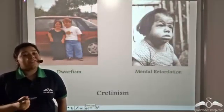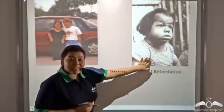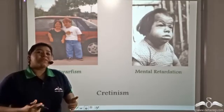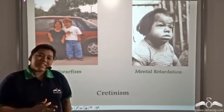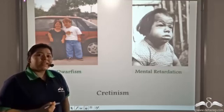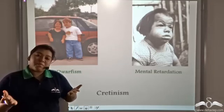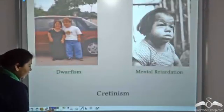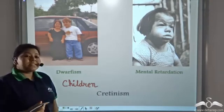Under-secretion of thyroxine hormone from the thyroid gland causes dwarfism, which is stunted body growth, as well as mental retardation, which is reduced brain growth. Both these symptoms together in children cause the disease known as cretinism. Thyroxine helps the cells of the body and brain to get proper energy, but in cretinism, under-secretion of thyroxine means the cells of the body and brain do not get proper energy for growth, resulting in stunted body growth and mental retardation.